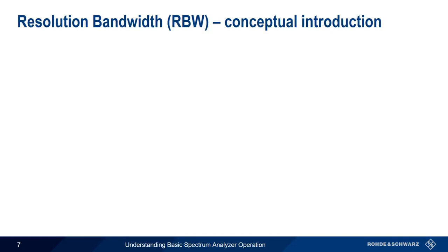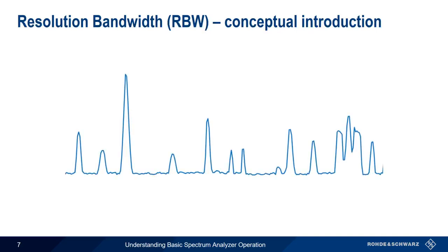Our next setting is resolution bandwidth. For basic spectrum measurements, resolution bandwidth is by far the most important setting. Most spectrum analyzers use the so-called heterodyne principle to measure spectrum by sweeping across the span. The trace showing power versus frequency is drawn from left to right, usually repeatedly.